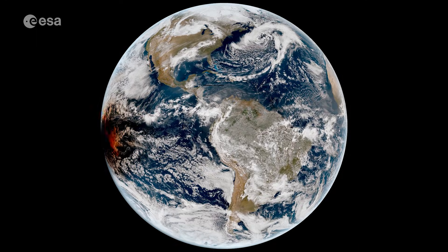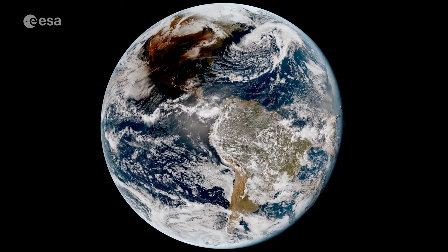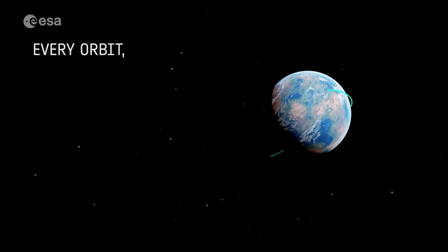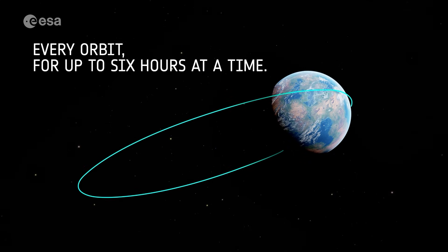Normally we can only see the corona during rare total eclipses and only for a few minutes, but Prober 3 can create an eclipse every orbit for up to six hours at a time.